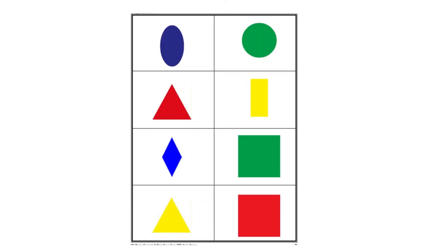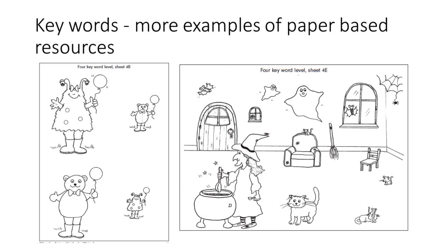You can incorporate barrier games into work on any class-based concepts. For example, shapes — an instruction might be 'put the blue counter on the yellow triangle' or 'put the yellow counter on the green circle.' Here is another paper-based resource used more for describing rather than giving an instruction — it's a spot-the-difference activity where one player has the picture on the left, the other has the picture on the right, and you take turns describing something about your picture. For example, 'on my picture I can see a frog jumping out of the water on the left-hand side of the kangaroo,' and the listener decides if theirs is the same or different. An example of a four-keyword instruction would be 'colour the big monster's balloon red' — requiring the right colour, size, character and body part.